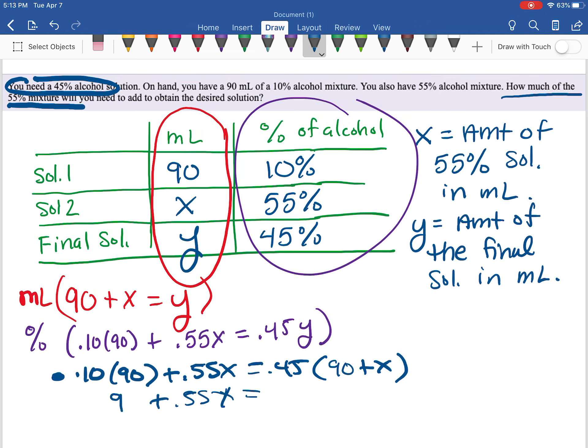Now I have to distribute my 0.45. So when I take 0.45 times 90, that's going to give me 40.5, and when I take 0.45 times x, that gives me 0.45x.